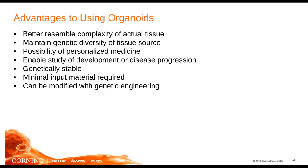Now that we have a better idea of what an organoid is, let's talk about why they are such a valuable model. They better resemble the complexity of the actual tissue they're modeling. When taken from a patient biopsy, they maintain the genetic diversity of the tissue source — important for understanding tissue complexity and for personalized medicine. For organoids generated from iPSC or ESC, they help us understand organ development and disease progression. Additionally, organoids can be maintained in culture for long periods without genotypic changes, can be initiated from a small amount of input material, and can be modified via CRISPR or other methods traditionally used for two-dimensional cell culture.